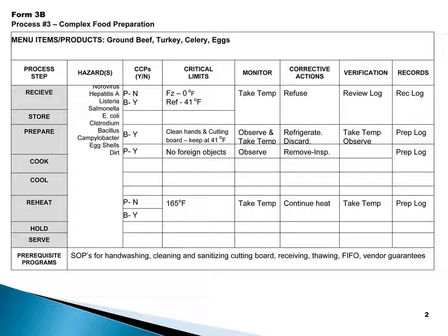We set our freezer critical limit at zero or below. They should be received at zero or below for the frozen product, which was the ground beef. For the refrigerated products they should be 41 or below. For the eggs, 45 or below. Taking the temperature — how you're going to monitor — you're going to take the temperatures of both of those, whether they're frozen or refrigerated. Your corrective action if they are not the proper temperature at receiving is to refuse the product and send it back with the vendor.